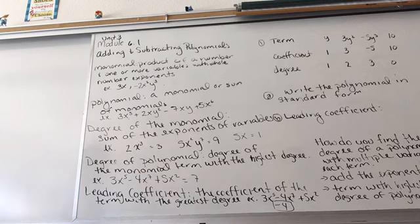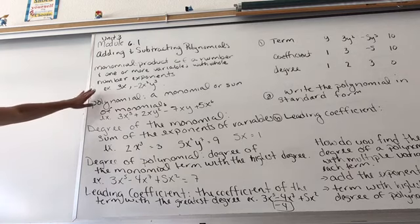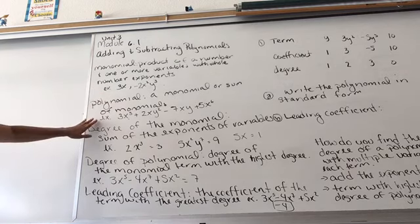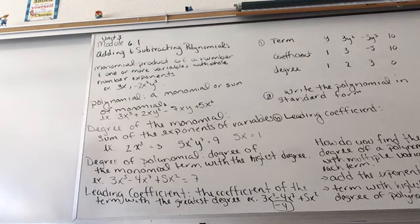I want to go over a few vocabulary words you should have seen, but we want to make sure everybody's up to the same place. So a monomial is a product of a number and one or more variables with whole number exponents, so no fractional exponents. A polynomial is a monomial or sum of monomials. And I have some examples here of a monomial, here of a polynomial. Notice the difference is that this is just a string of monomials separated by adding and subtracting.